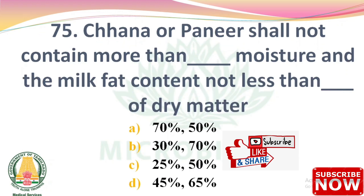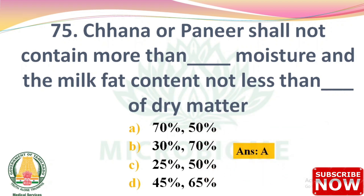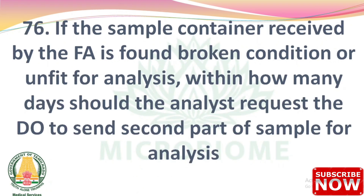Next question: channa or paneer shall not contain more than dash moisture and the milk fat content not less than dash of dry matter — options: 70% and 50%, 30% and 70%, 25% and 50%, 45% and 65%. The right answer is Option A: 70% and 50%.